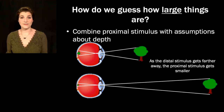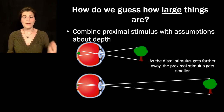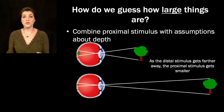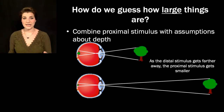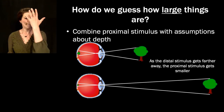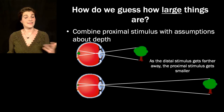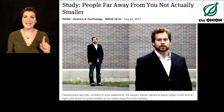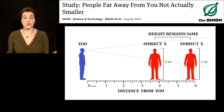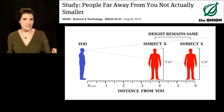We can combine the proximal stimulus with our assumptions about depth to arrive at a best guess about size. We need some mechanism for dealing with the fact that as things get farther away, they make a smaller proximal stimulus. Without that mechanism, we'd have the terrifying illusion that people shrink as they walk away. The satirical magazine The Onion reminds us that people who are far away from you are not actually smaller—this human is the same height whether he's four yards or six yards away.